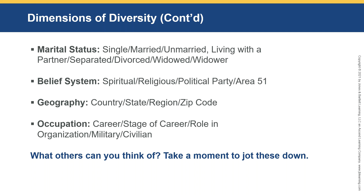Geography — country, state, region, even zip codes. Baltimore as a city has very unique people, businesses, and cultures by zip code. Occupation, career, stage of career, role in organization, military versus civilian — there's a lot of difference between people in these areas. So these are many dimensions of diversity, but what others can you think of? I'd like you to take a moment to jot these down.